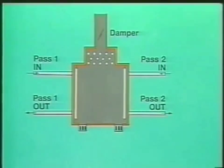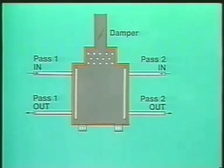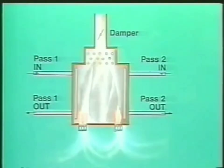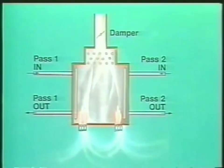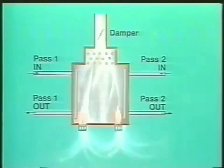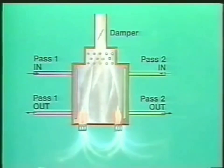Now let's see what happens in our simple model of a furnace. The air registers are open to provide the correct amount of air for combustion. The damper is adjusted for the correct amount of draft. The feedstock is pumped into the furnace and divided between the passes.